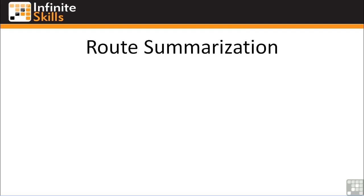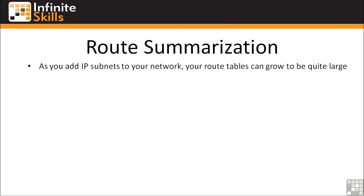As you get larger and larger networks, your routing tables and your routers can grow to be quite large. Some of you might be asking, why is this really a big deal? Isn't that what routers are supposed to do — route traffic from one subnet to another? How is it going to know how to route if it doesn't know about all of the subnets? Well, there are a few reasons why you might not want to have a massive route table spread across all the routers in your network.